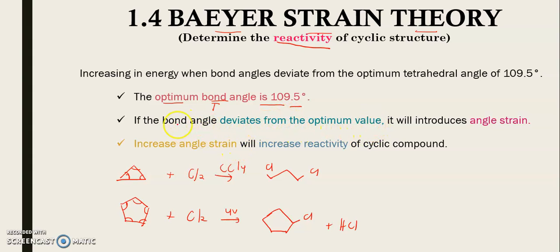If the bond angle deviates from the optimal value, meaning when the bond angle is not equal to 109.5 degrees - for example, cyclopropane resembles a triangle with a bond angle of 60 degrees, and cyclopentane is like a pentagon with a bond angle of 108 degrees. Both structures have bond angles not equal to 109.5, so they are not equal.